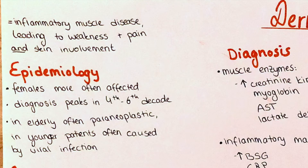Dermatomyositis is an inflammatory disease which causes muscle weakness, muscle pain, as well as skin rashes. It can also have various other symptoms that we will talk about later. As with other collagenosis, women will more frequently be affected than men — approximately twice as many women are affected. The point of diagnosis is most often made between the fourth and sixth decade of the patient's life.